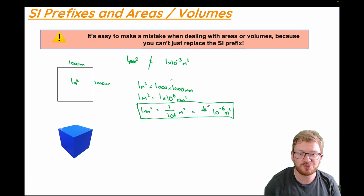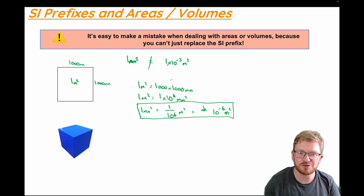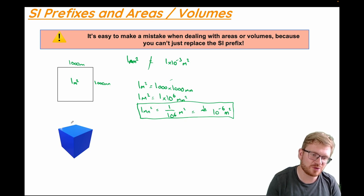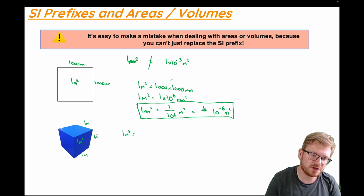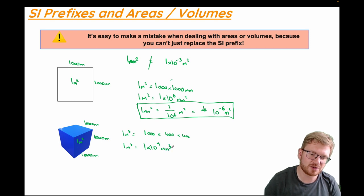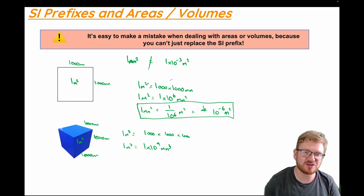If you remember that fact, you'll be fine — just be really careful as soon as you're dealing with areas or volumes. For a bit of fun, let's do the same for volumes. A one metre cubed block is one metre by one metre by one metre — that would be one thousand millimetres times one thousand millimetres times one thousand millimetres. So one metre cubed equals one times ten to the power of nine cubic millimetres. We'll do some practice of that in the lesson today.